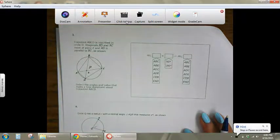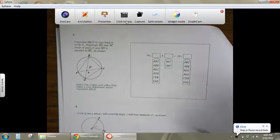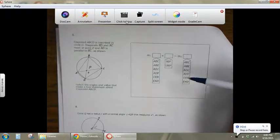All right, looking at problem three, we have a trapezoid inscribed in a circle, and we have to select some of these choices to create a true statement.